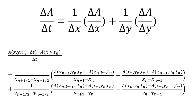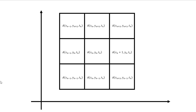Let me explain this by showing the grid system. This is the grid system of the function x, y, and t. You can imagine the x-axis is like here and the y-axis is like here. Delta t, delta x, and delta y are like this.